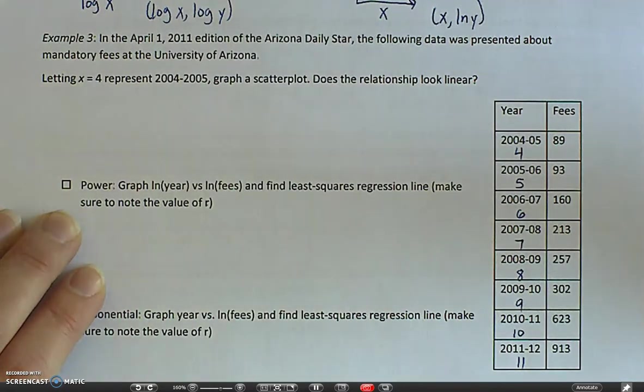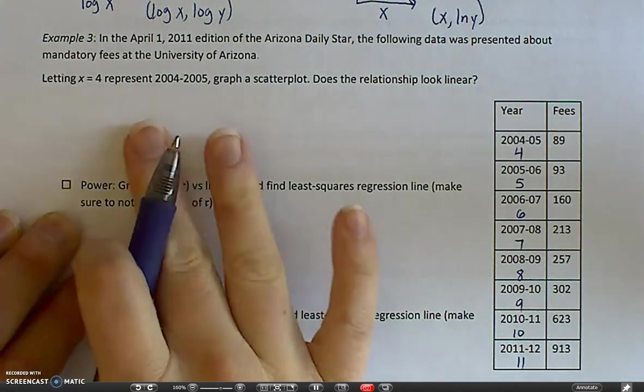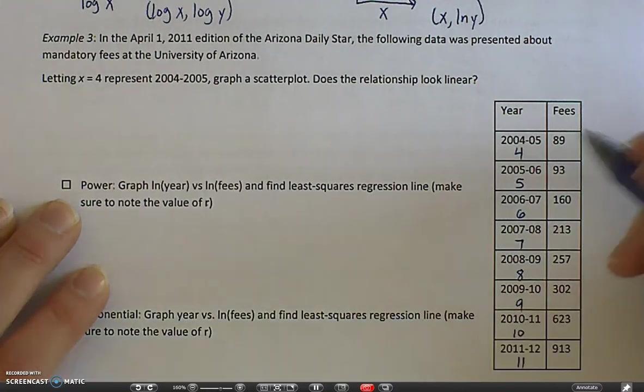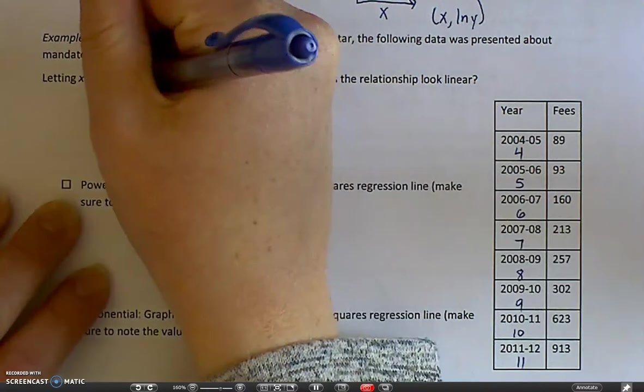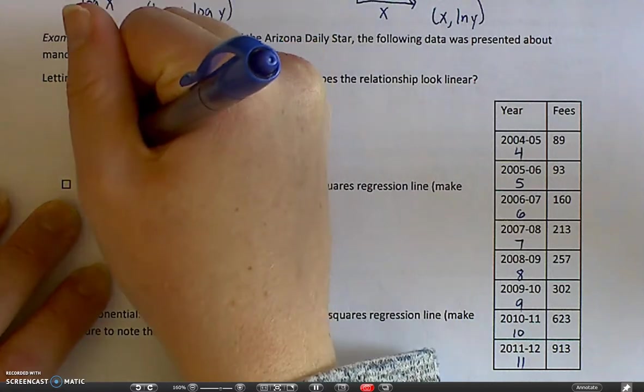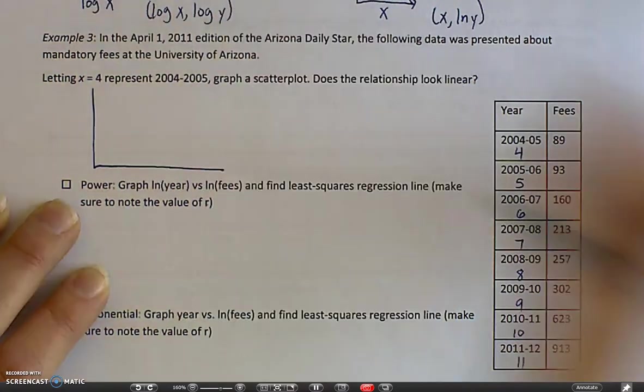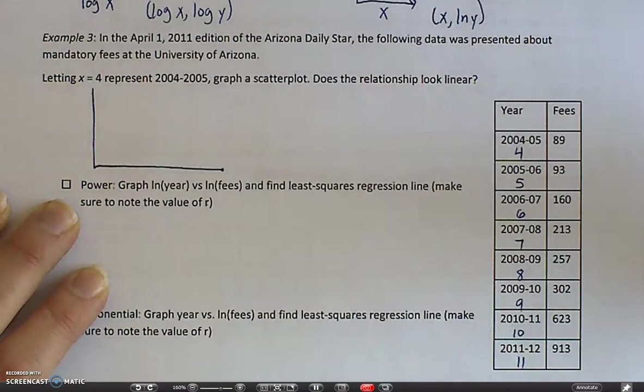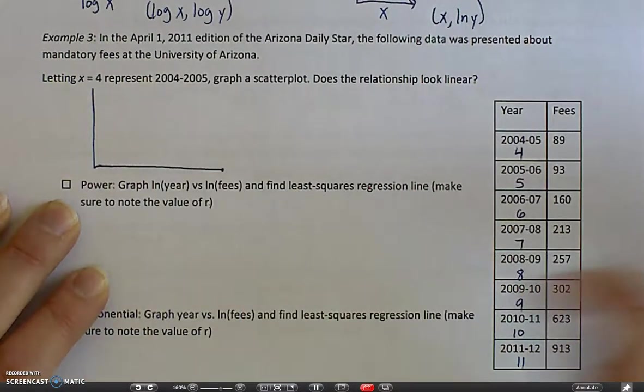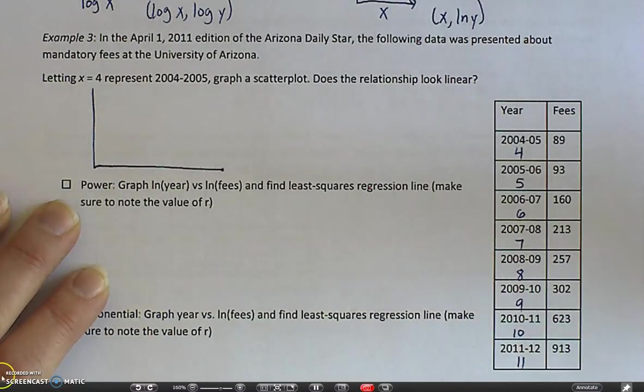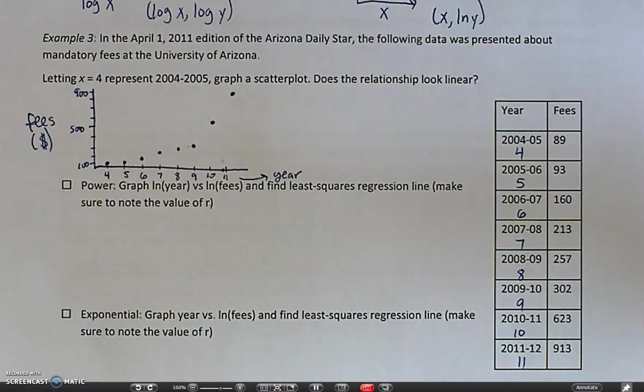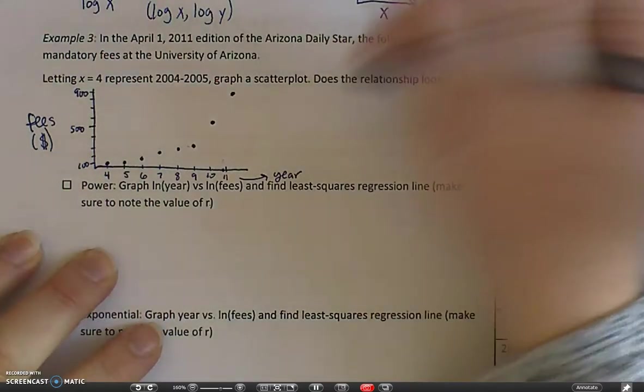And let's just make a rough scatter plot here of our data. So we'll do that now. I'm not even going to put it in my calculator yet. I just want to make a rough graph. As you can see from my very rough scatter plot sketch, this is clearly not linear, right? Not linear.